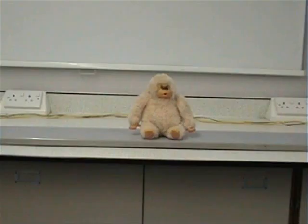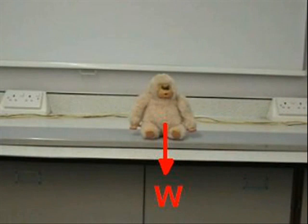If an object is sitting on a horizontal surface, two forces are acting on it. There's the downward force of its own weight, and there's the upward force provided by the surface it's sitting on. We call this the normal reaction force, and this is at right angles to the surface. Since the object is in equilibrium, the normal reaction force N is equal to the weight W.